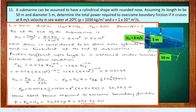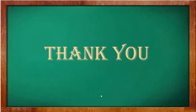Total power required to overcome boundary friction = F_D × velocity. This gives approximately 290.83 kW as the drag force power. Thank you.